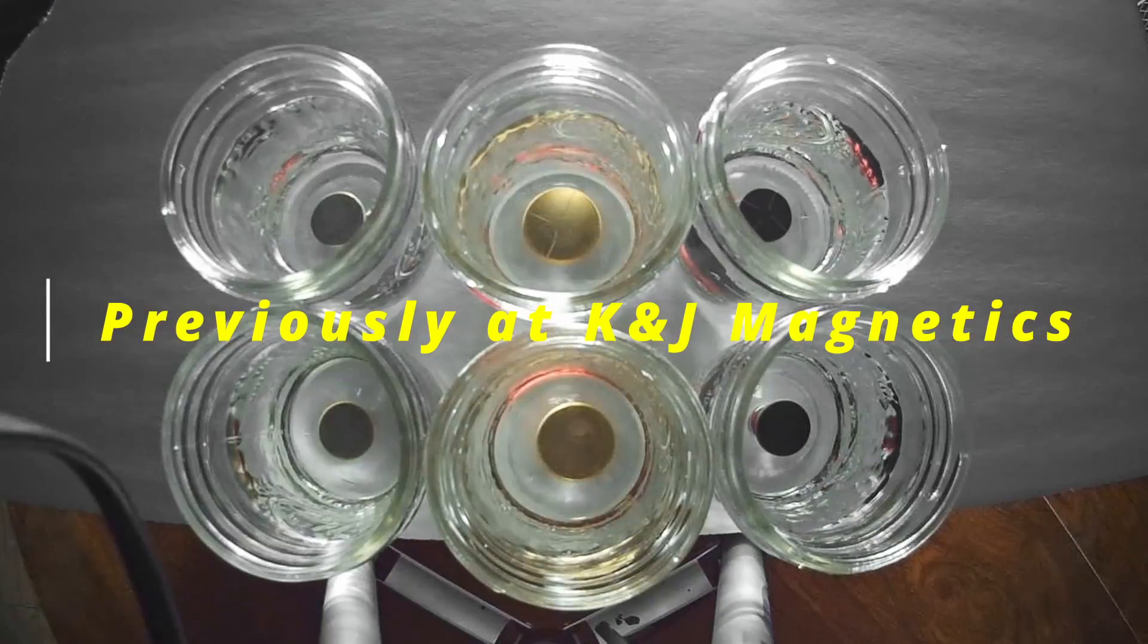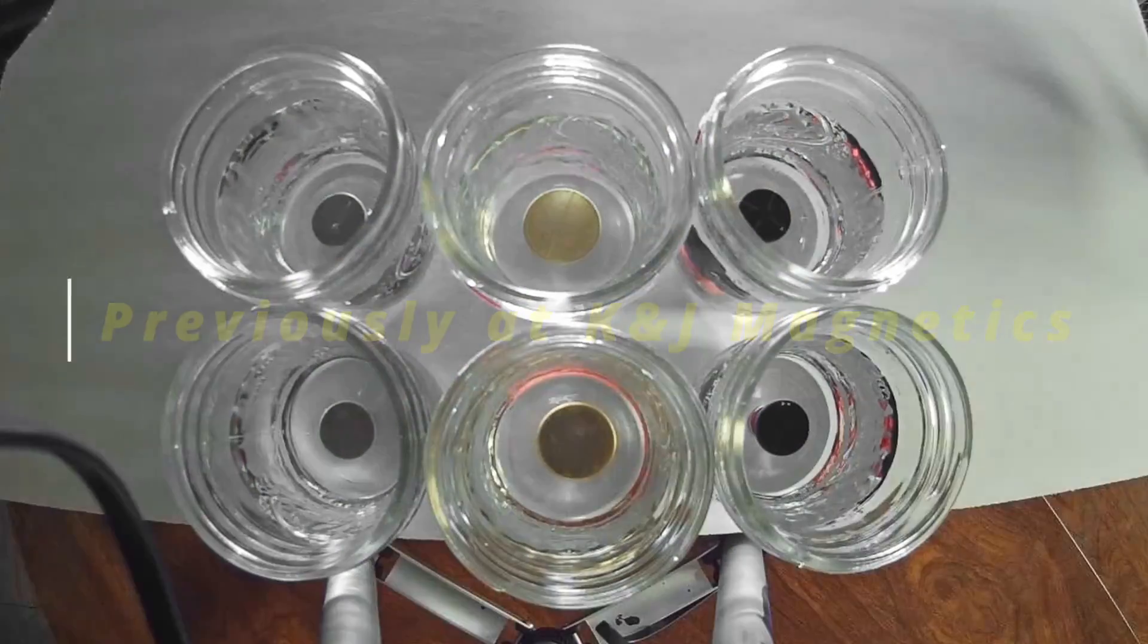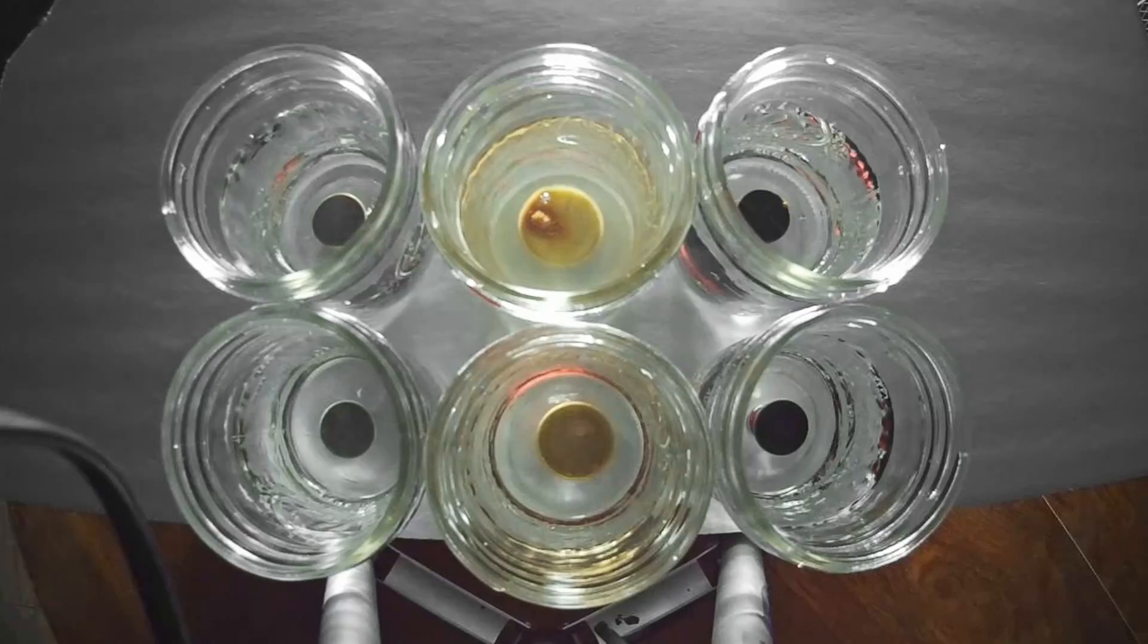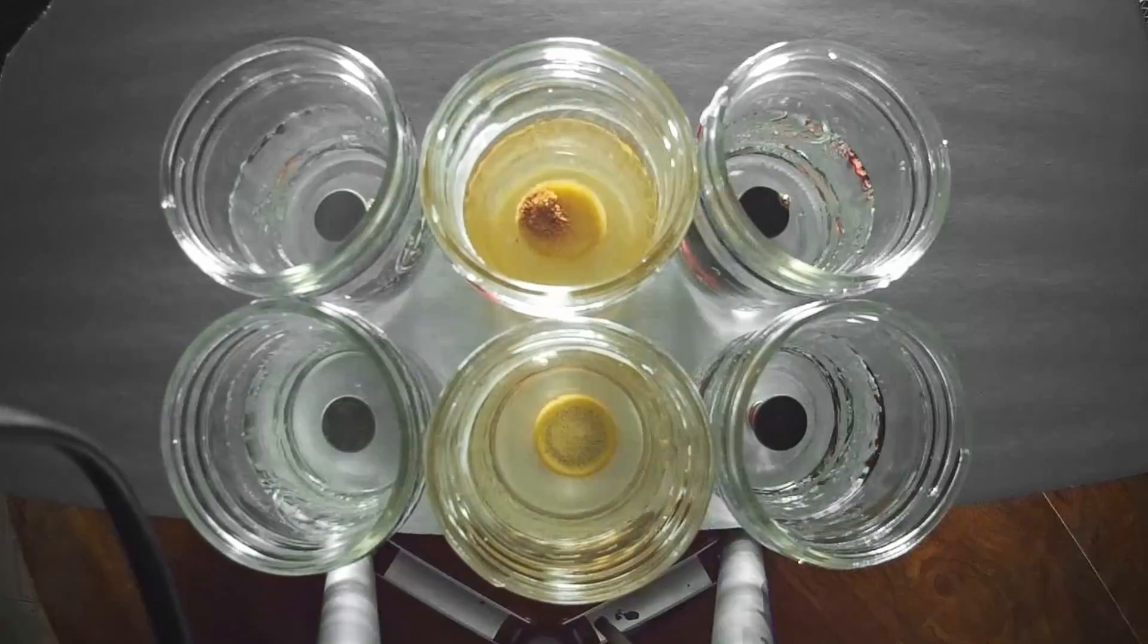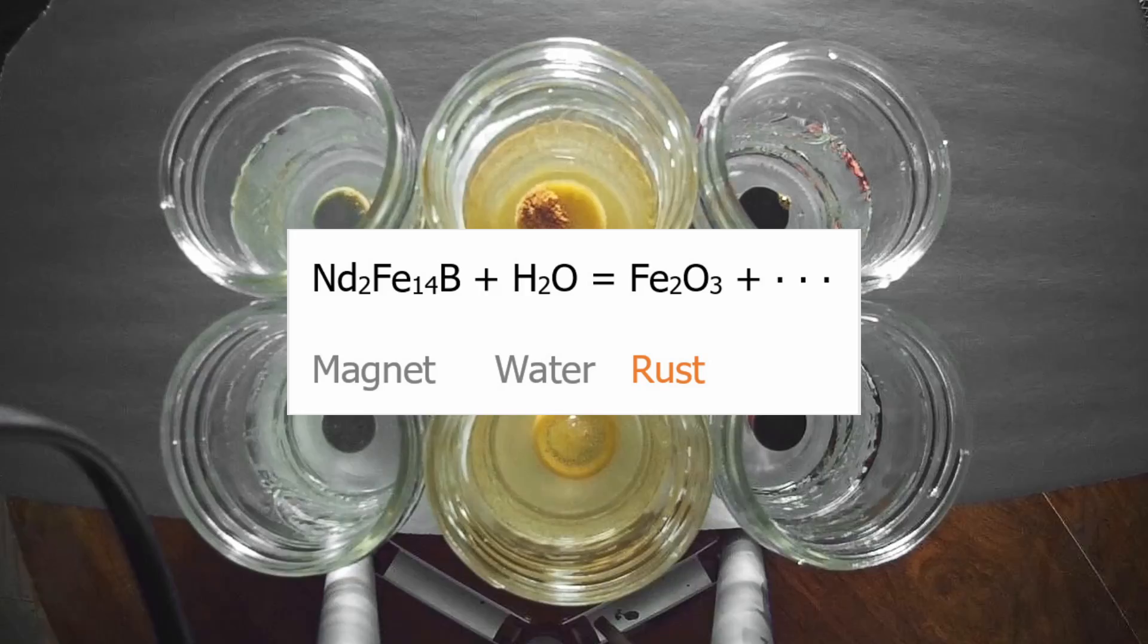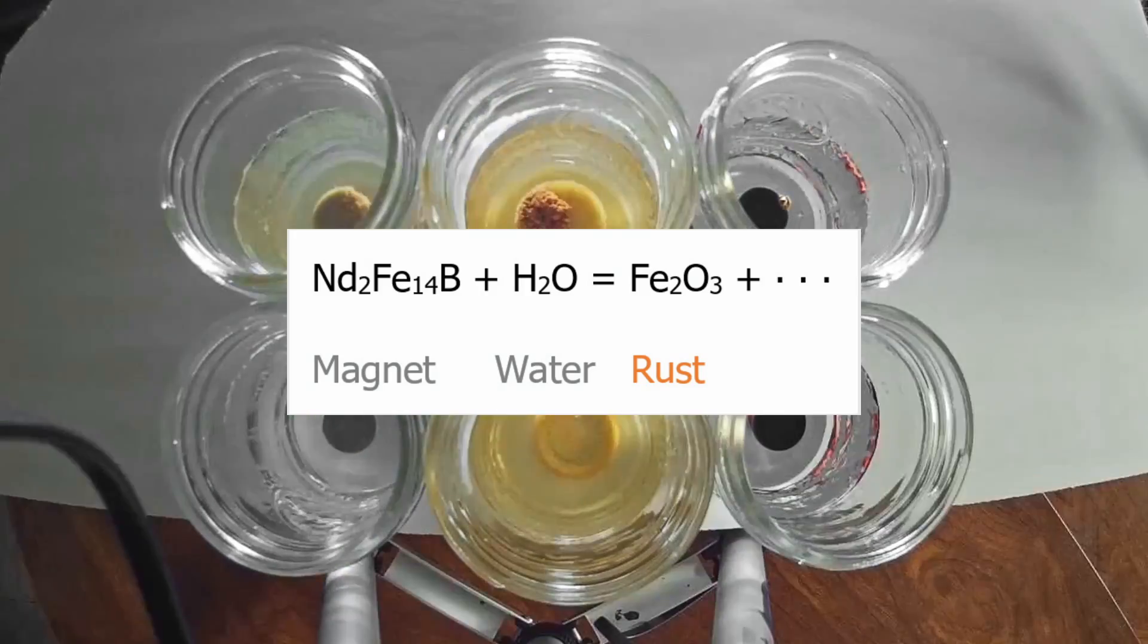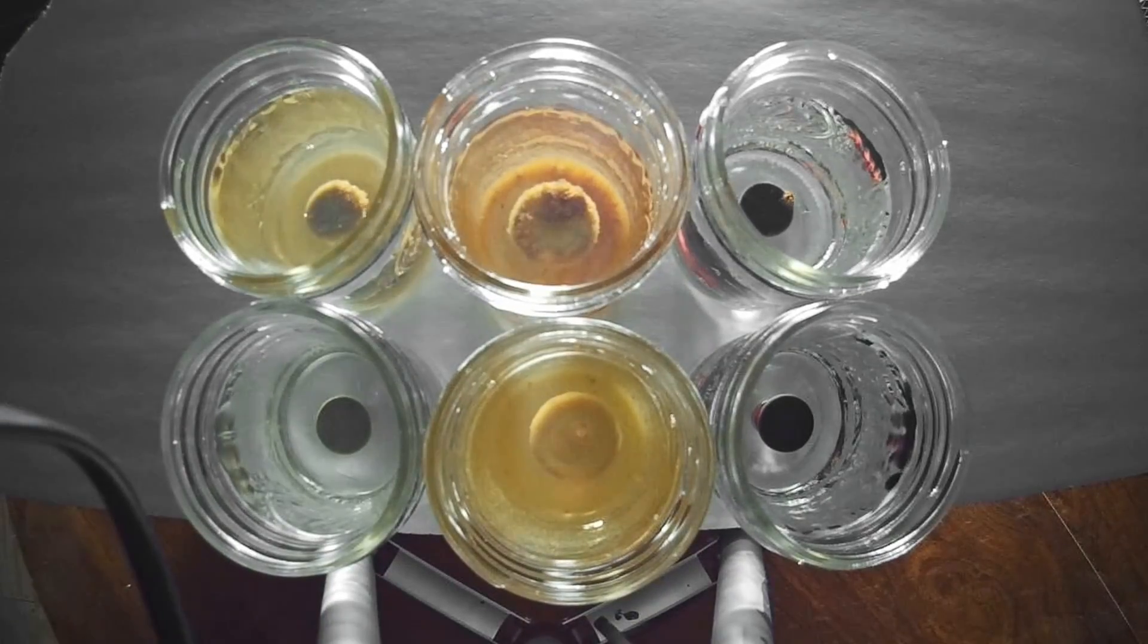In a previous video, we tested how long our nickel, gold, and epoxy plated magnets would last being submerged in salt water. We watched for weeks as they slowly started to corrode. Now, we'll put our corrosion-resistant plastic and thermoplastic rubber coatings to the test.